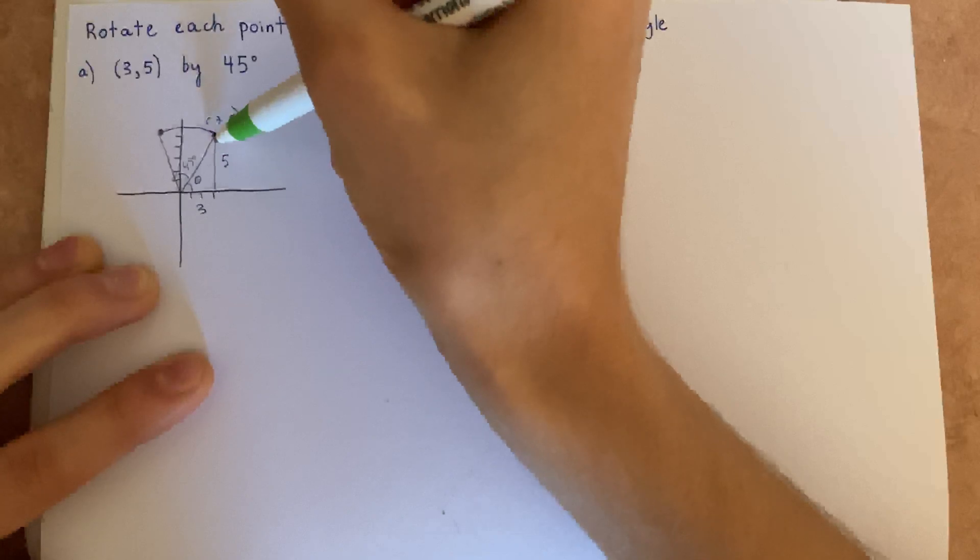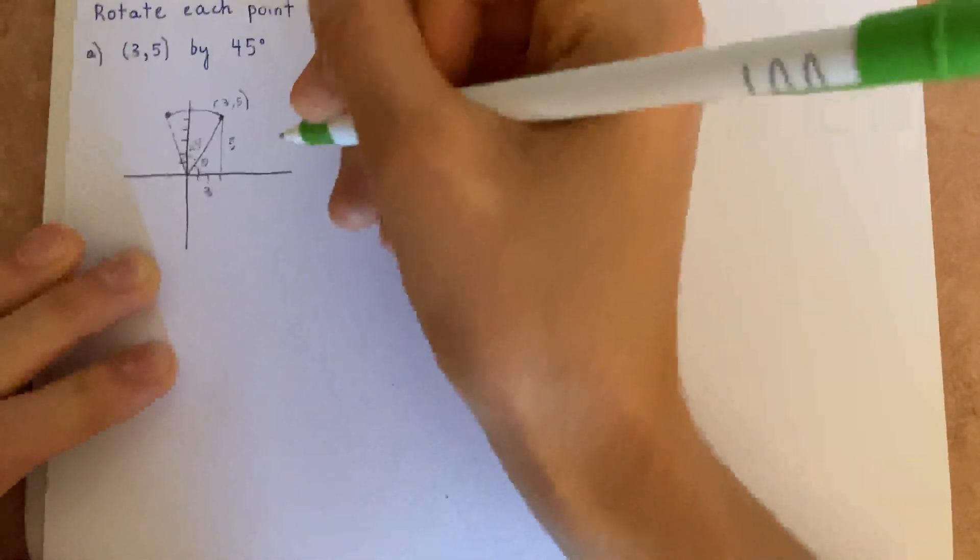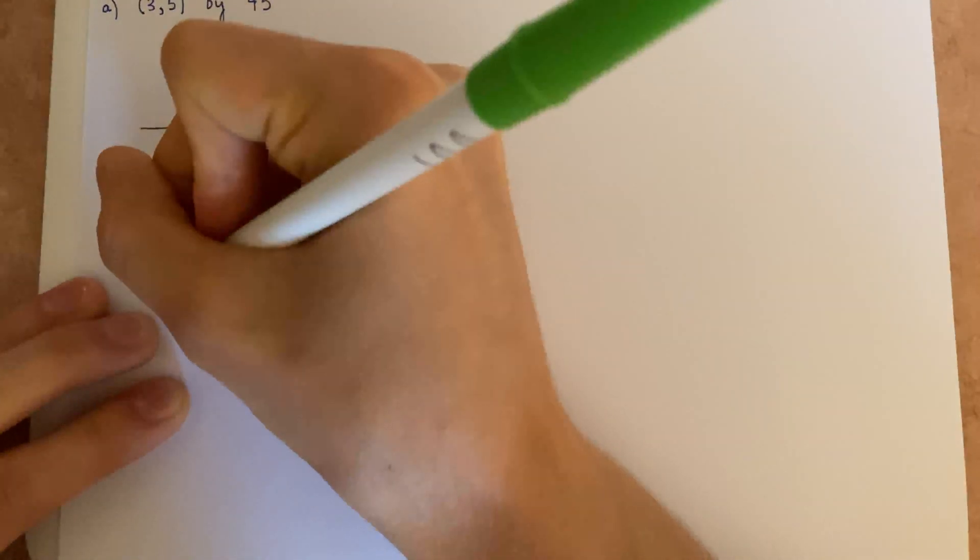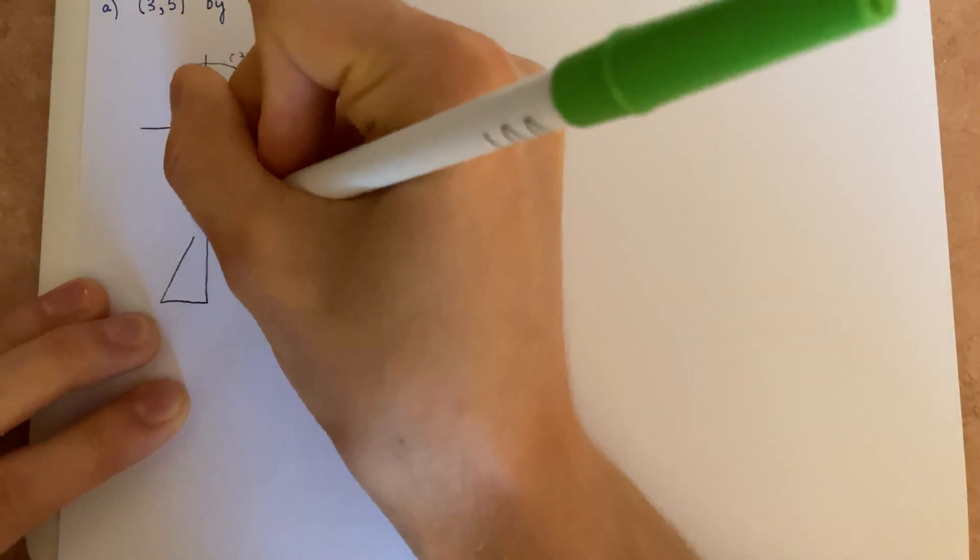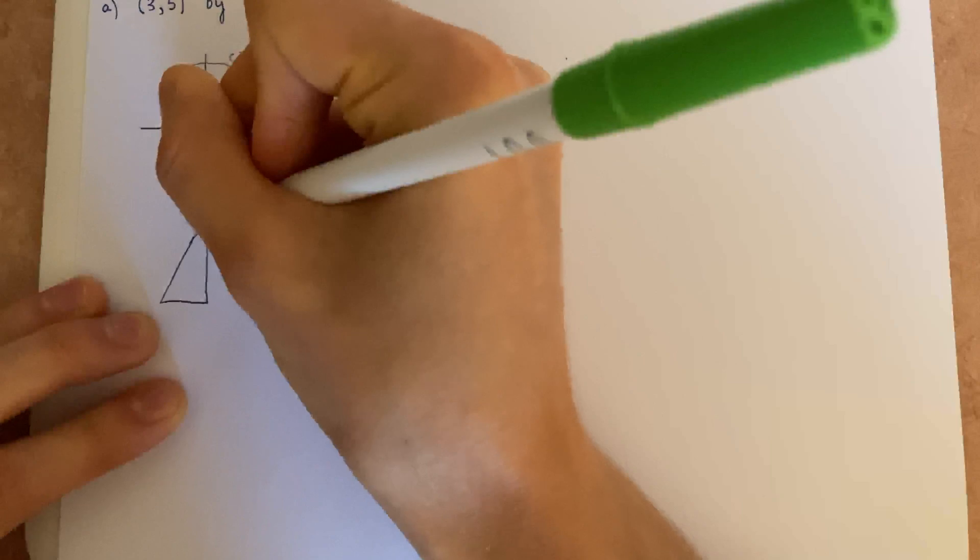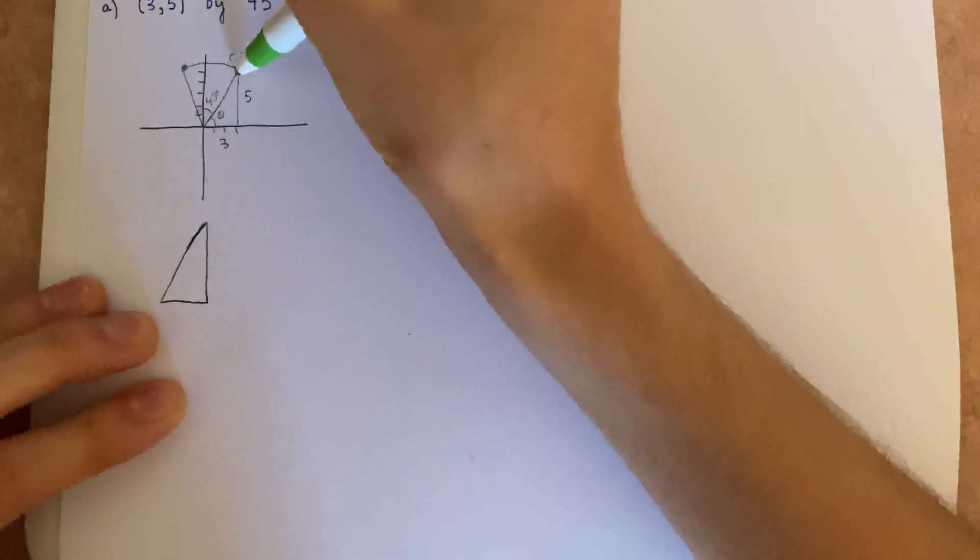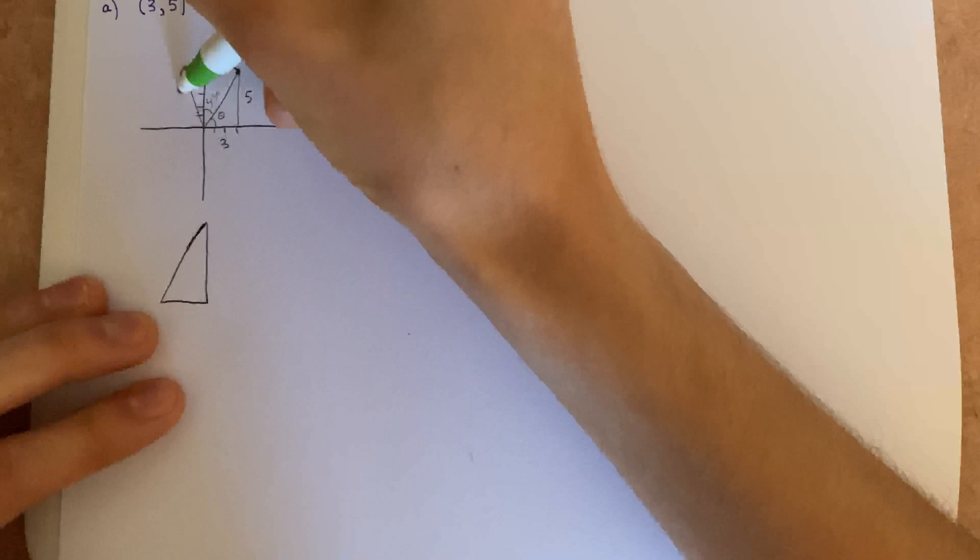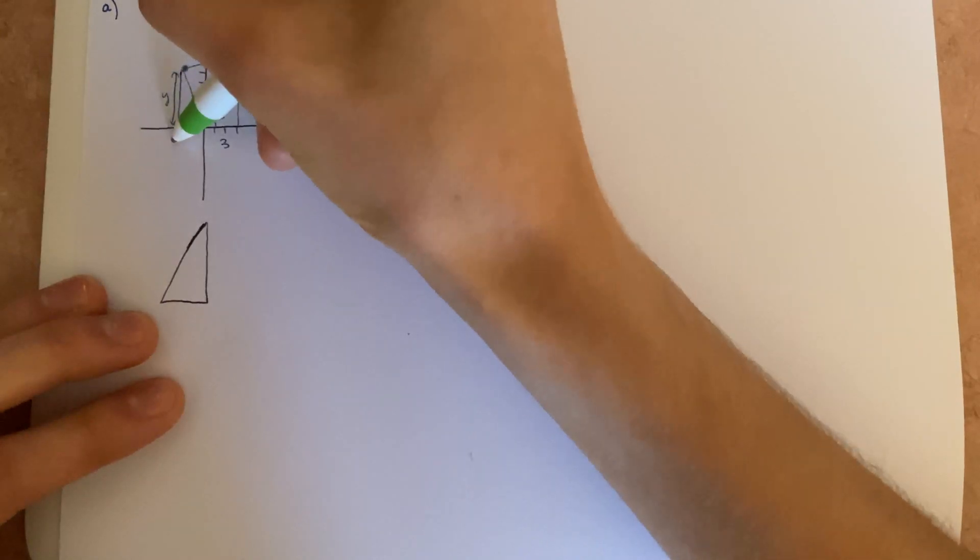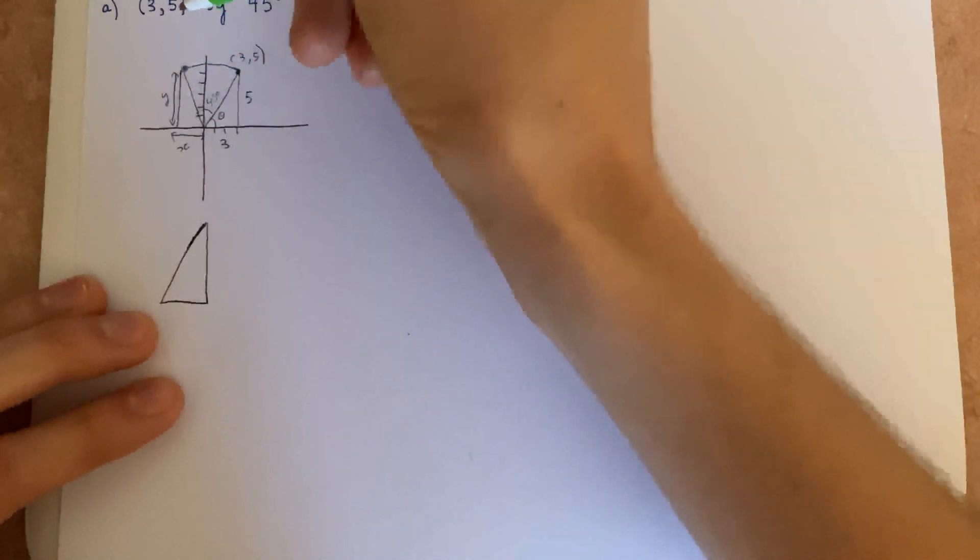An easy way to do this is by solving this triangle first. Let's find this length, which we can use to construct this triangle. And then find this length y and this length x, and then we will know the points.